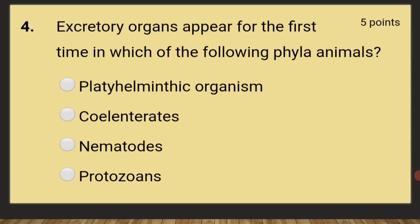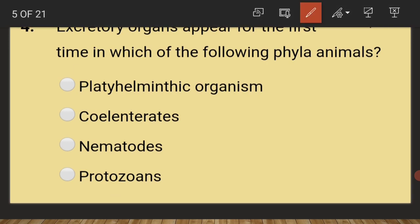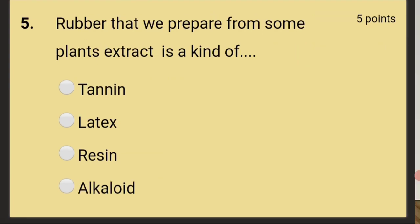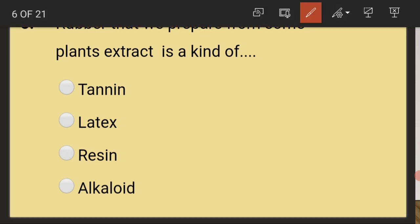Excretory organs appear for the first time in which phyla? The answer is platyhelminthes — tapeworms are the best example. Additionally, rubber that we prepare from some plant extract is a kind of latex.